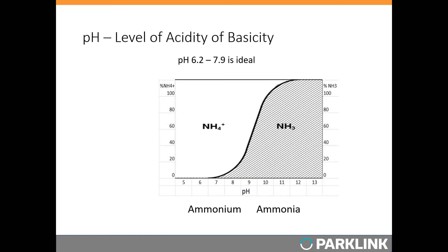Beyond pH 8.5, you get conversion of ammonium (NH4+) to ammonia (NH3). At high levels, either form is toxic to nitrifying bacteria, but NH3 is toxic at lower amounts than NH4+. When plant pH gets above 8.5 there are very serious inhibitory effects, and ammonia will also volatilize out of the wastewater plant, causing odor issues.